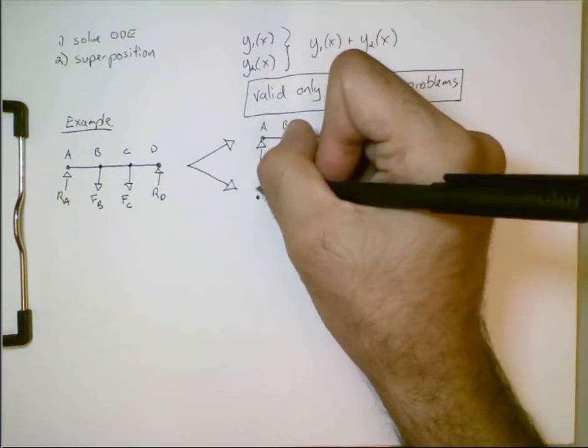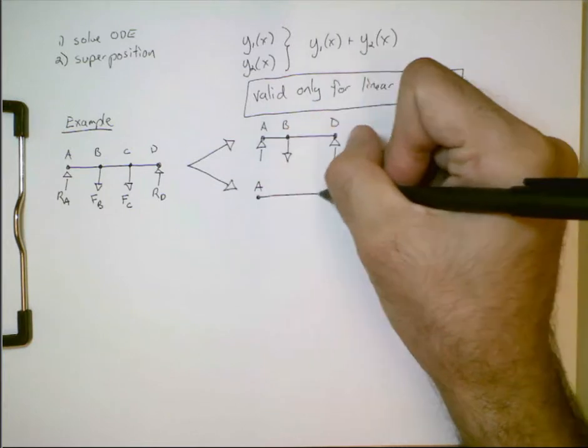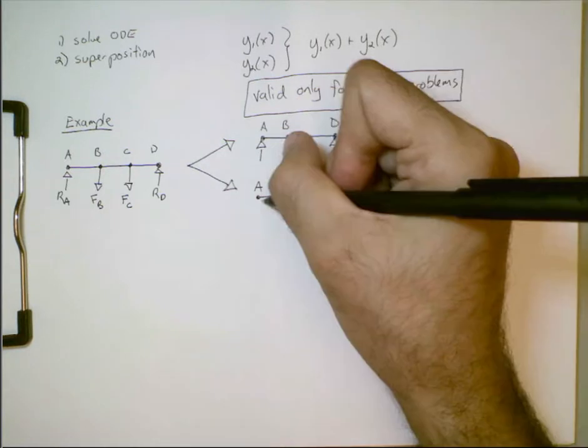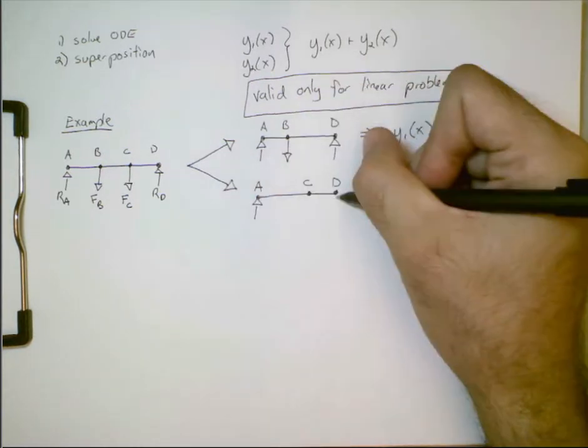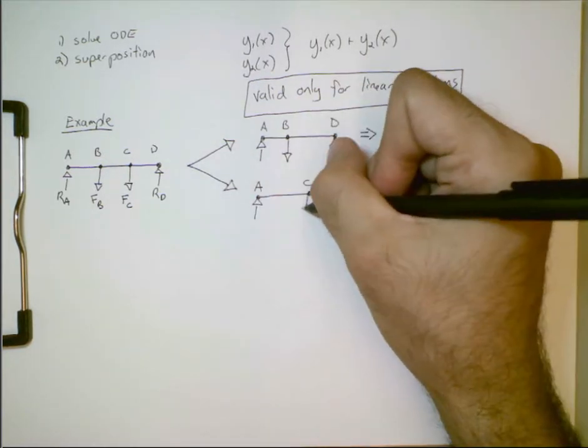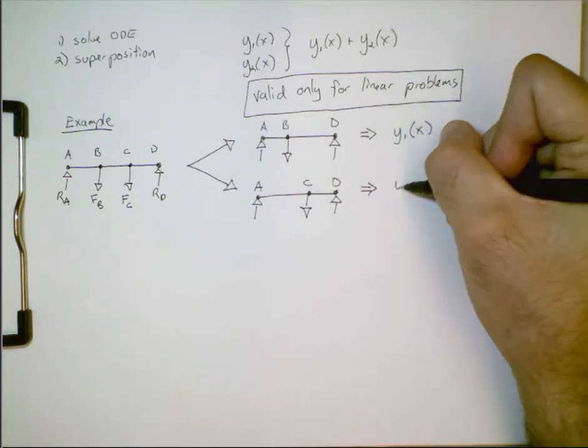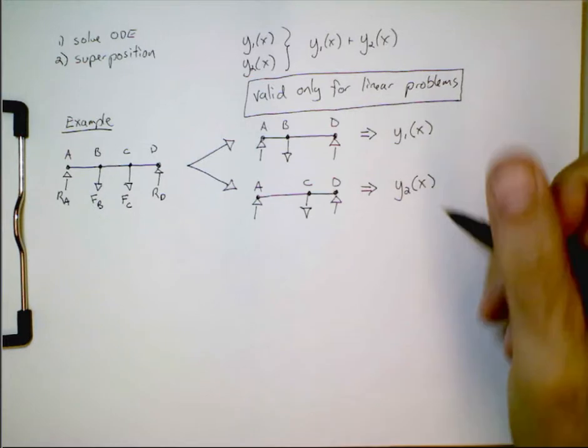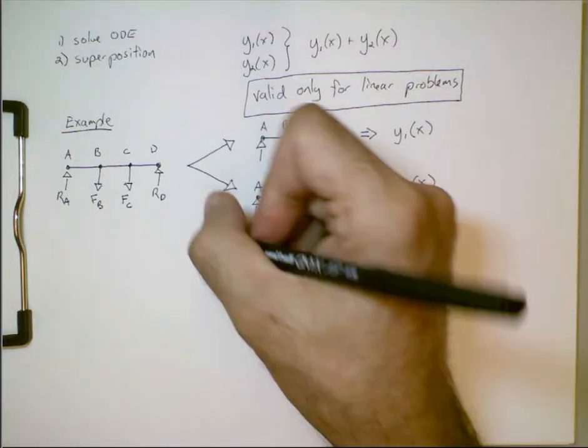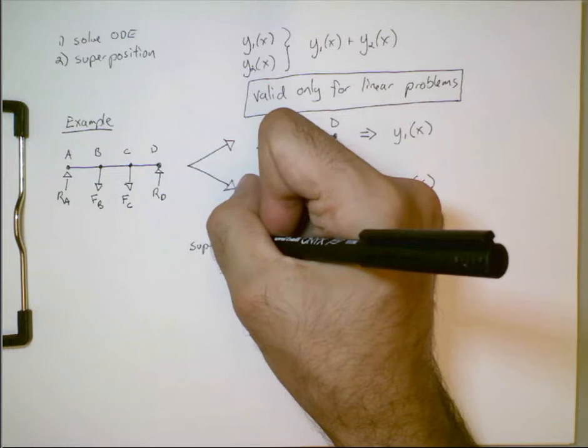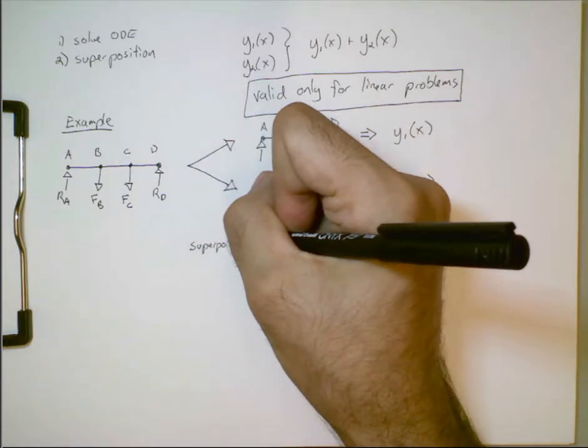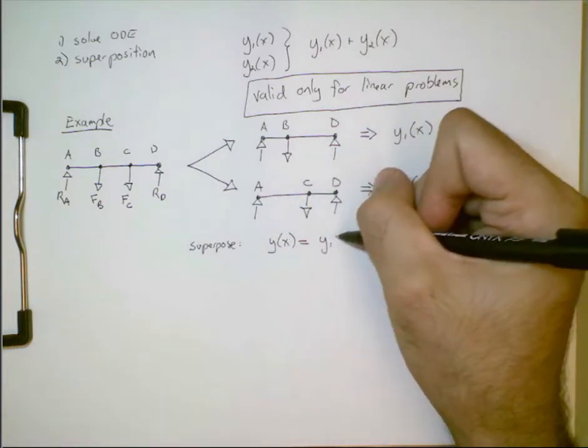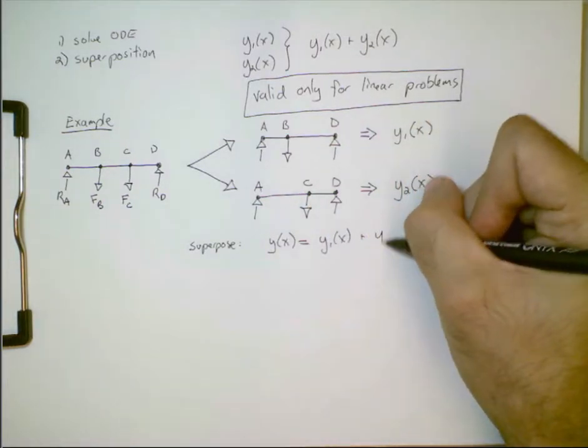And then, let's look at this case where we have A, C and D. So, we have two reaction forces and one applied force. We can look that up in the table, figure out what the deflection is, we'll call that y2 of x. And then, we can superpose these. So, the solution to the original problem, that's going to be equal to y1 of x plus y2 of x.